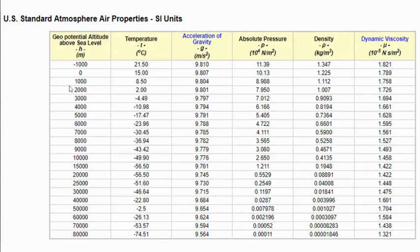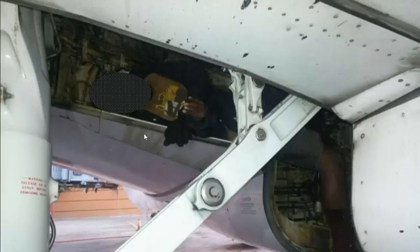So at zero elevation: 15 degrees, 1013 hectopascals, air density of 1.225 kilos per cubic meter. Up at 10,000 meters: minus 50 degrees, about 26 percent of normal pressure, and 413.5 grams per cubic meter of air. It is absolutely freezing up there — you've probably heard about guys stowing away in the wheel wells of planes and basically freezing to death and falling out. They probably couldn't breathe either, so not a good way to go.